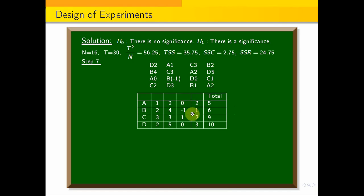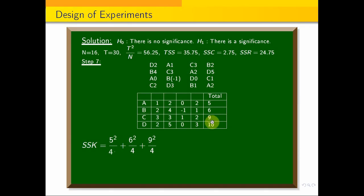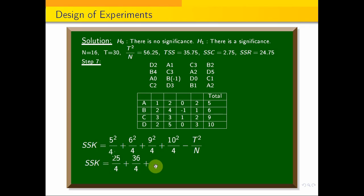Using the treatment sum of squares formula (SSK): (5 squared by 4) plus (6 squared by 4) plus (9 squared by 4) plus (10 squared by 4), minus T squared by N. That is: (25 by 4) plus (36 by 4) plus (81 by 4) plus (100 by 4), minus 56.25. Using a calculator, we get SSK equals 4.25.